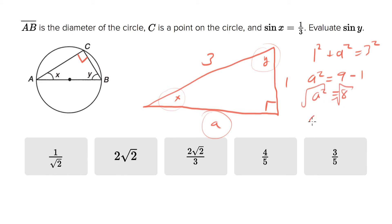So a therefore equals 2√2. Now, we want sin y. Sin y is opposite, which is a, over 3, which is 2√2/3. That's the ratio, and we're looking for an answer choice that says that, and we've got one right there.